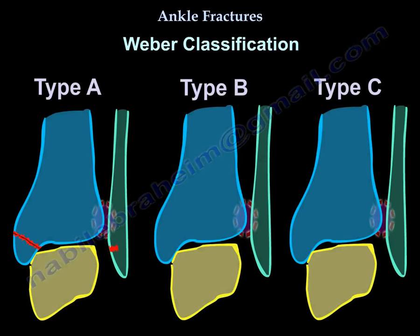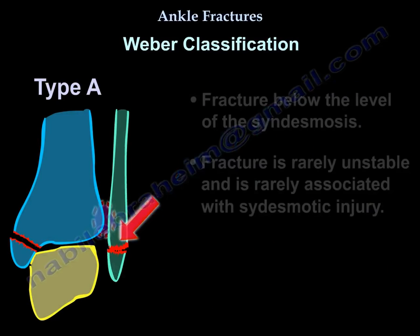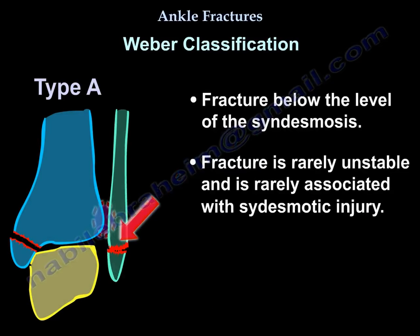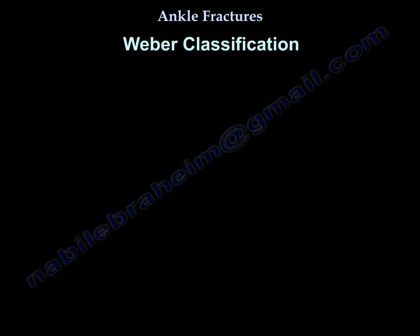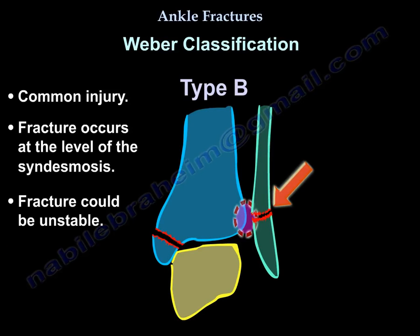Weber A: the fracture is below the syndesmosis, and that fracture is rarely unstable, but it could have syndesmotic injury. Weber B is common — the fracture occurs at the level of the syndesmosis, and the fracture could be unstable.